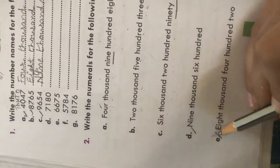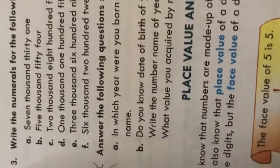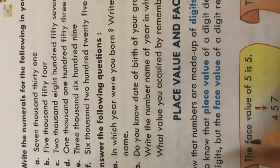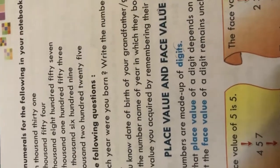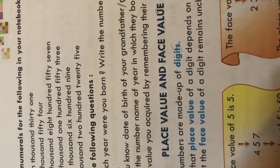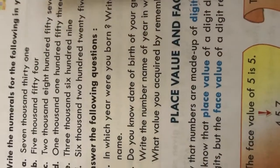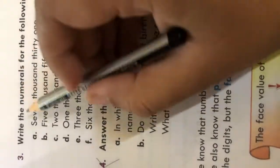Parts D and E are your homework. Now question number three: write the numerals for the following in your notebook — but you will do this in your book.